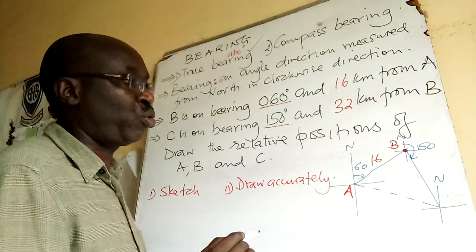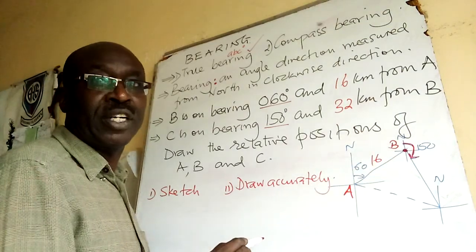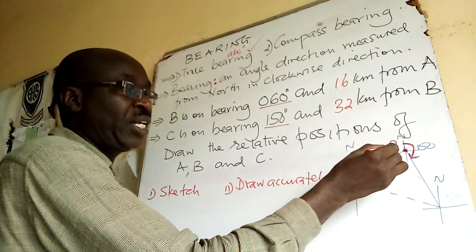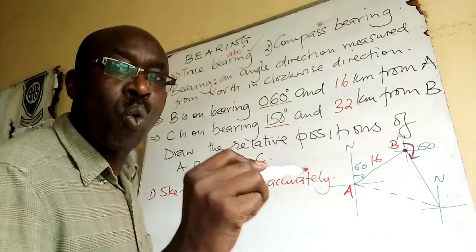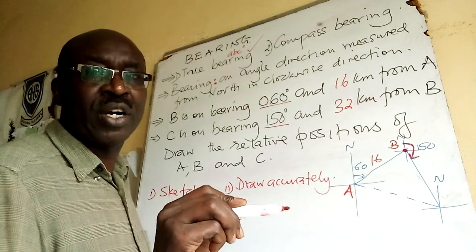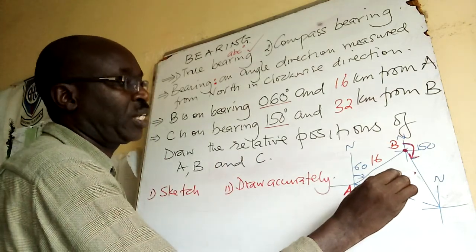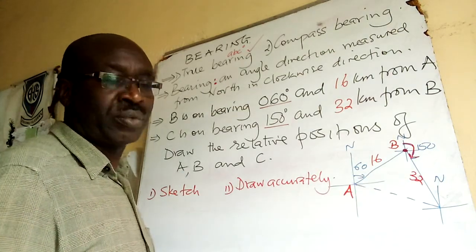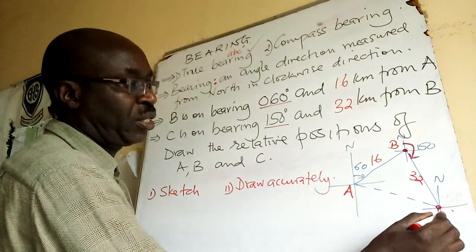So if this is our B, we draw a compass. Then we are told it is 150. The direction of C with respect to B is 150. Remember, all angles are measured from north. So we sketch from there up to here, 150. Then we draw a line. So C is along this direction. Which particular point? It is the distance you are given that determines that point. We are told it is 32. So you measure 32 using the scale. Then you get here point C.